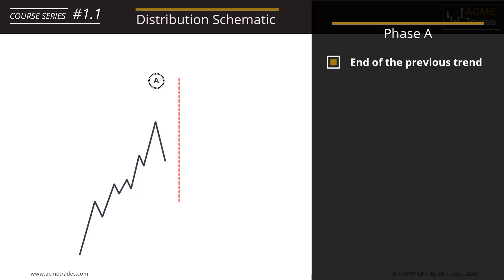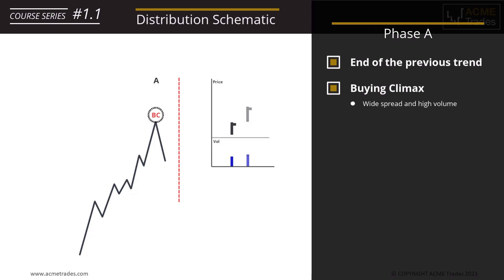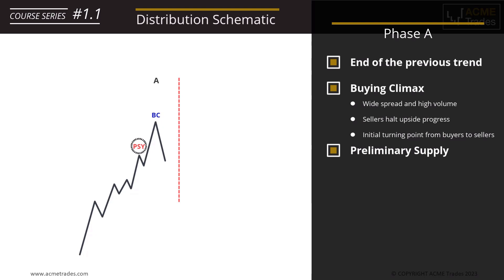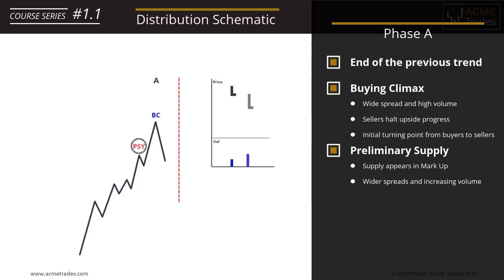Here within distribution we're looking for a buying climax. It has the same characteristics — a very wide spread and high volume. The high volume is represented by the battle between buyers and sellers, as the sellers have to halt the uptrend and begin to distribute, opening short positions to start the distribution campaign. This is the initial turning point between buyers and sellers. Not forgetting PSY — preliminary supply — which indicates supply is beginning to appear within markup.